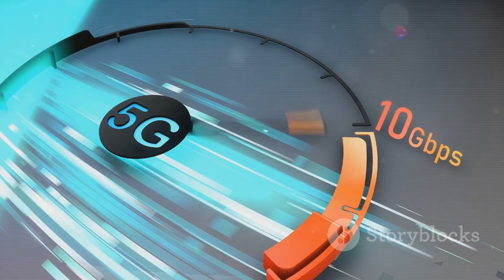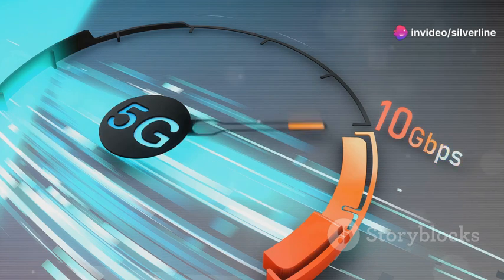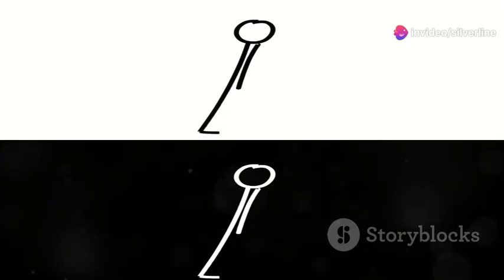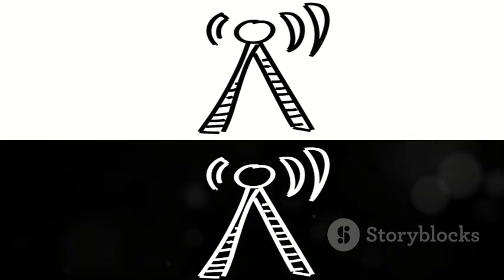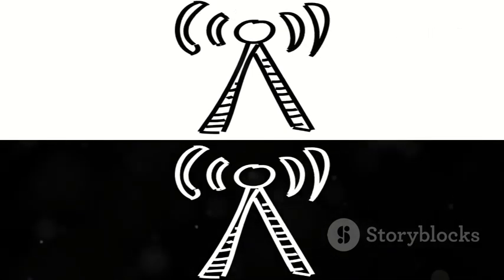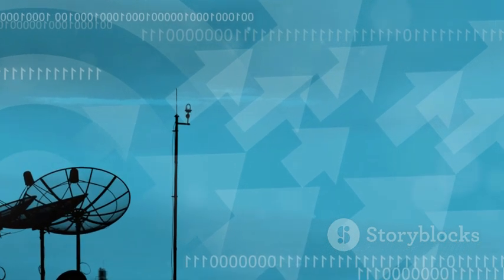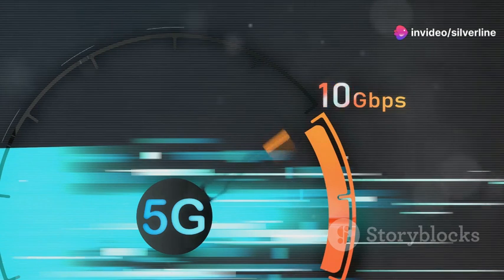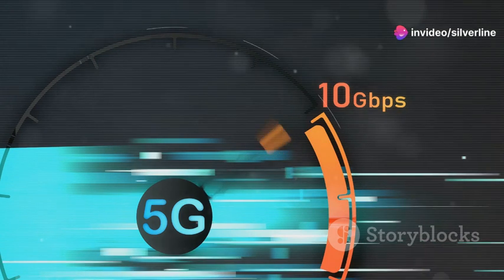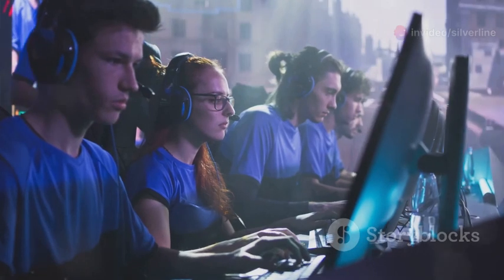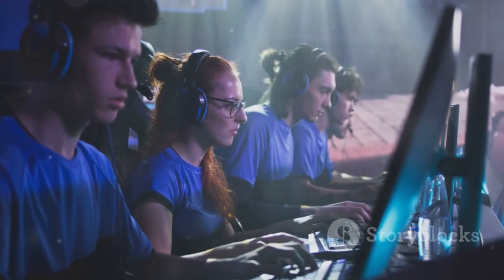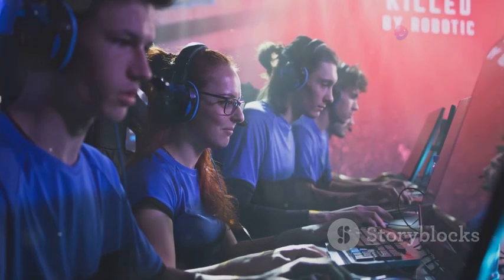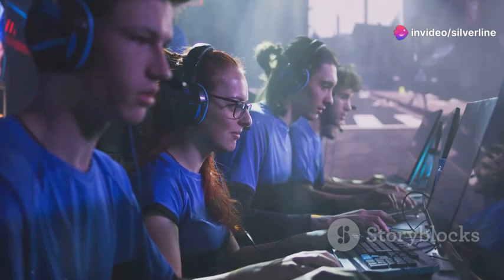Moreover, 2T2R systems can achieve higher data rates compared to single antenna systems. This is because the two transmit antennas can transmit data simultaneously using a technique called spatial multiplexing. Spatial multiplexing essentially doubles the data carrying capacity of the channel, leading to faster download and upload speeds. This makes 2T2R well suited for applications such as video streaming, online gaming, and other bandwidth intensive tasks.